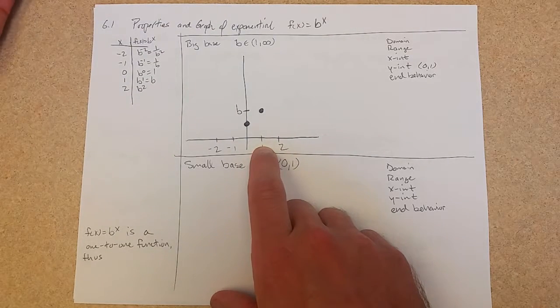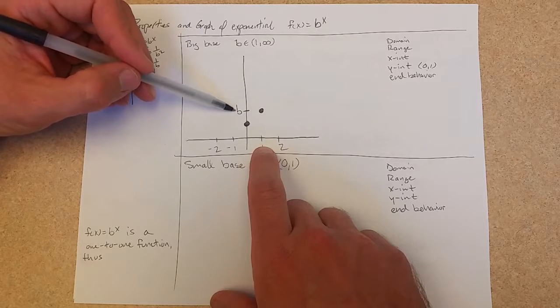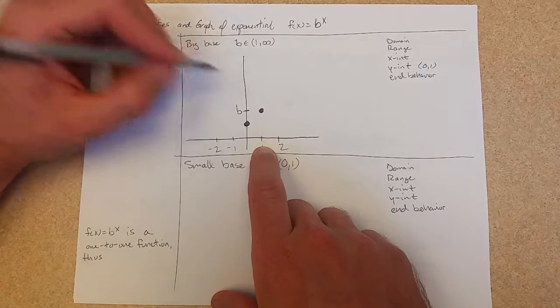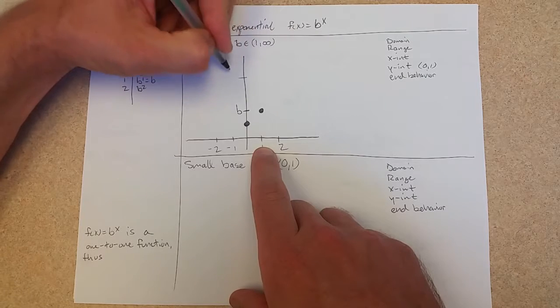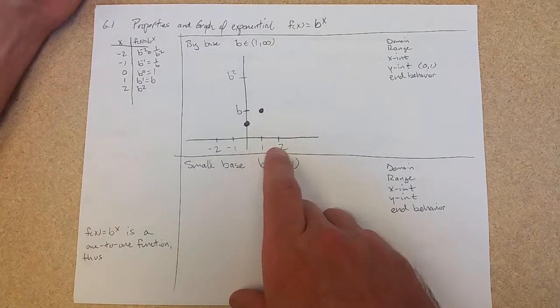Now what is b squared? This is where it was sort of important to kind of guess what b was. So if b is close to 2, b squared is going to be pretty close to 4. So we'll just pretend that's something like b squared right up there.